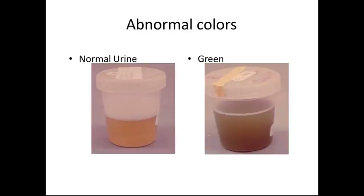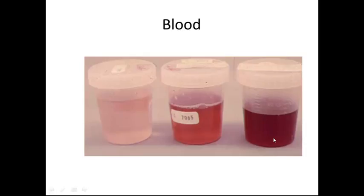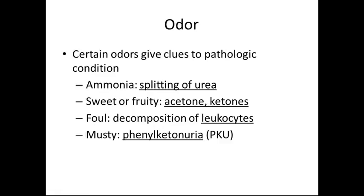Examples of abnormal colors: on the left-hand side we have what normal urine looks like — the container is labeled on the lid and on the cup portion. Here is an example of green colored urine, with a little bit of foam on top of the specimen. Additional examples include pink, clear-red, and dark-red or reddish-brown colored urine.